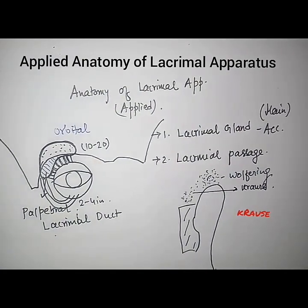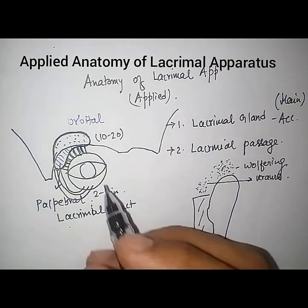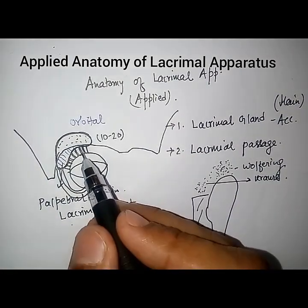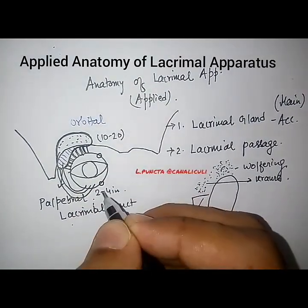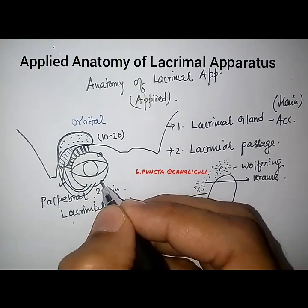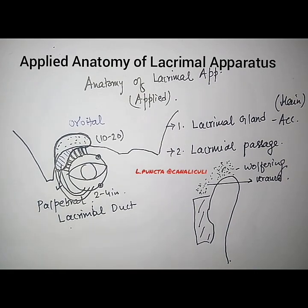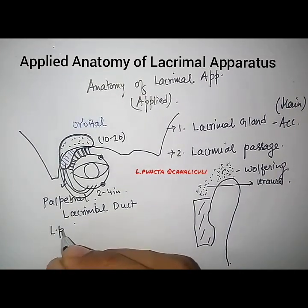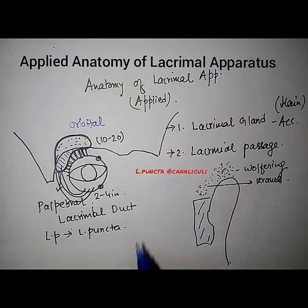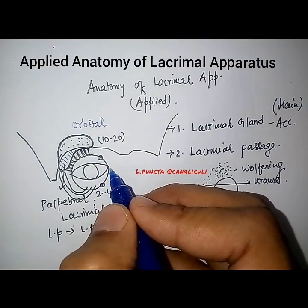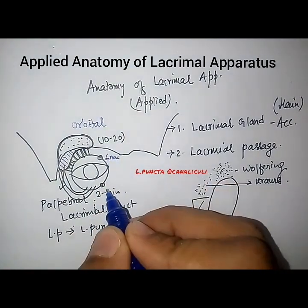The lacrimal passage: lacrimal ducts come from the upper and lateral portion, opening into the lacrimal puncta. There are two lacrimal puncta — the upper and the lower. The upper lacrimal puncta is situated about six millimeters from the inner canthus toward the temporal side, and the lower is six point five millimeters.